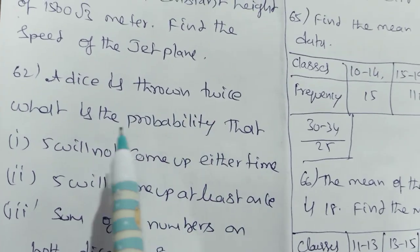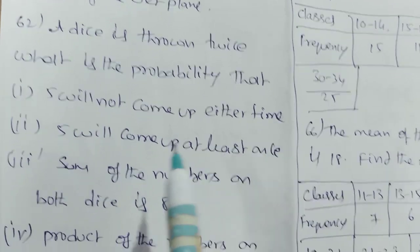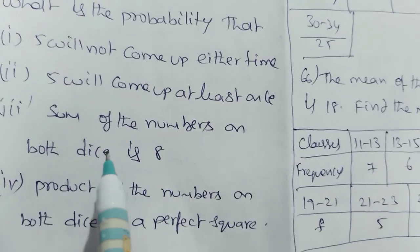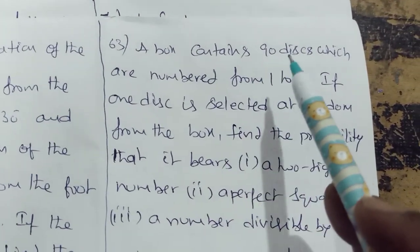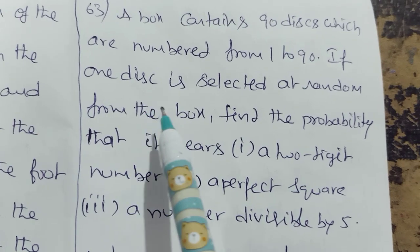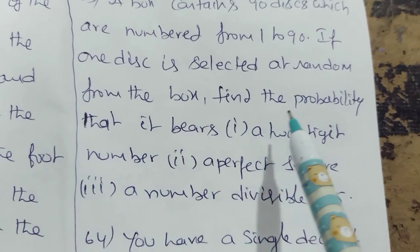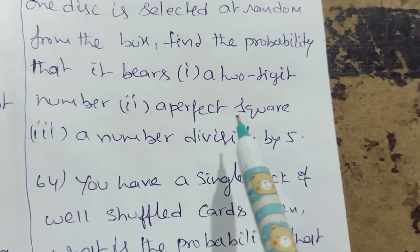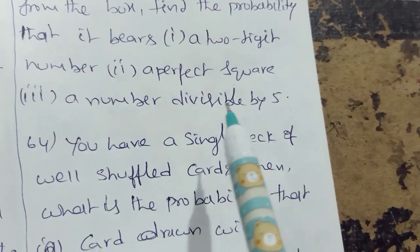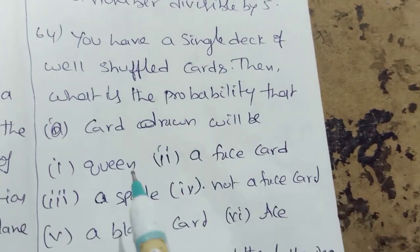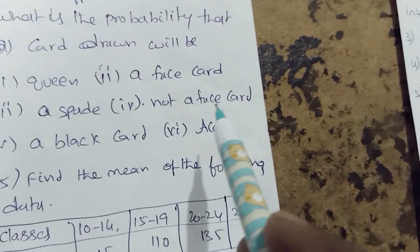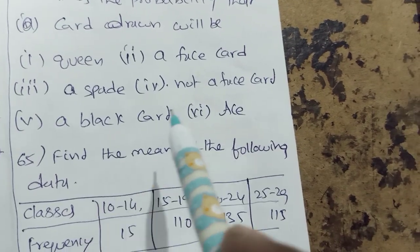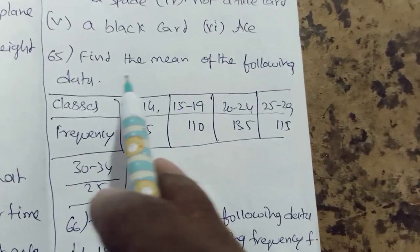Probability. A dice is thrown twice. What is the probability that 5 will not come up either time, 5 will come up at least once, sum of the numbers on both dice is 8, and product of the numbers on both dice is a perfect square? A box contains 90 discs which are numbered from 1 to 90. If one disc is selected at random from the box, find the probability that it bears a two-digit number, a perfect square number, or is divisible by 5. From a single deck of well-shuffled cards, what is the probability that a card drawn will be a queen, a face card, a spade, not a face card, or a black card or ace?